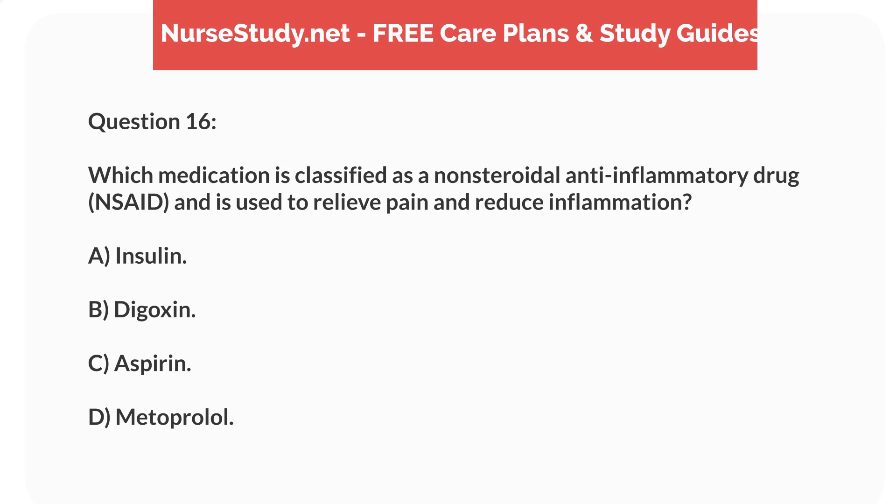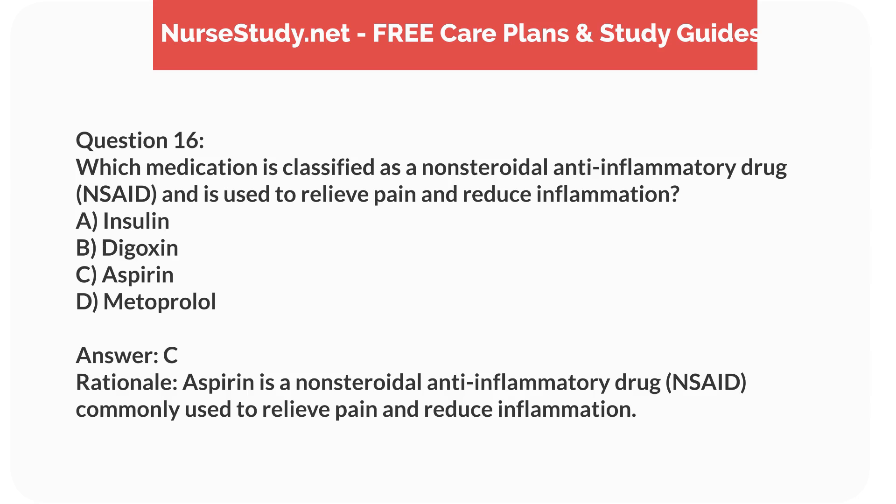Question 16. Which medication is classified as a non-steroidal anti-inflammatory drug (NSAID) and is used to relieve pain and reduce inflammation? A. Insulin. B. Digoxin. C. Aspirin. D. Metoprolol. Answer: C. Rationale: Aspirin is a non-steroidal anti-inflammatory drug (NSAID) commonly used to relieve pain and reduce inflammation.